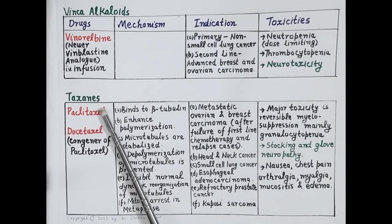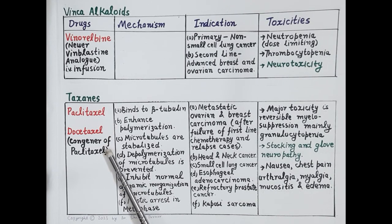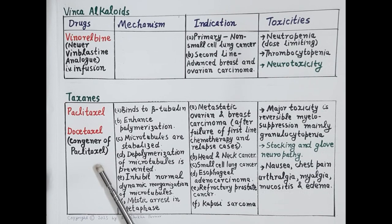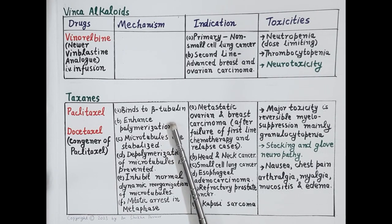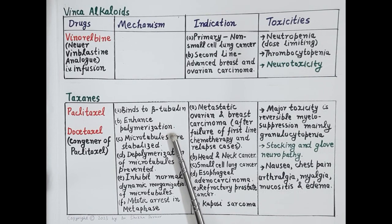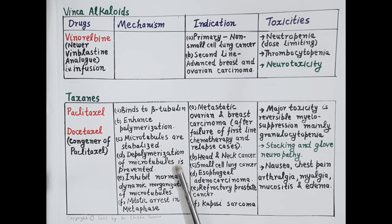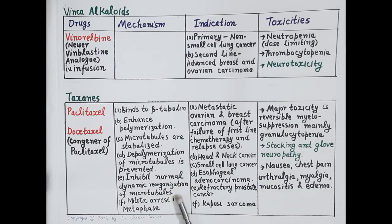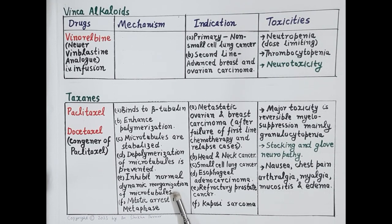Now let's discuss taxanes. Paclitaxel and docetaxel belong to this category; docetaxel is a congener or derivative of paclitaxel. These drugs bind to beta-tubulin and enhance polymerization of microtubules. Microtubules are stabilized and depolymerization is prevented. Thus microtubules cannot contract and the length of spindle fibers does not shorten. Taxanes inhibit normal dynamic reorganization of microtubules, preventing shortening of spindle fibers, so mitosis is arrested in metaphase and cells cannot divide.